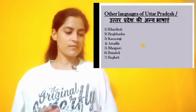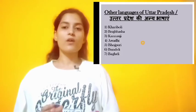Jo adhikarik roop se Uttar Pradesh mein languages di gayi thi — aapko bataya gaya — Hindi 14 September 1949 mein aur Urdu 1989 mein di gayi thi. Iske alawa aur bhi boli hain: Khaari Boli, Braj Bhasha, Bagheli, Bundeli — is tarah se saat boliyan boli jaati hain.